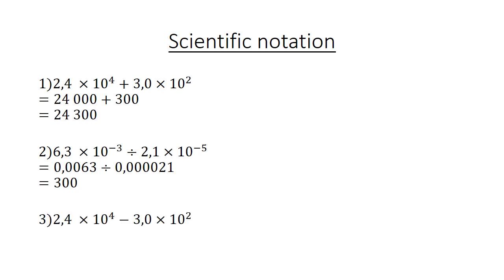2.4 times 10 to the negative 4 minus 3.0 times 10 to the power of negative 4 equals 24,000 minus 300, which equals 23,700.